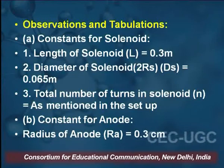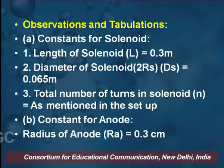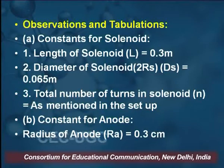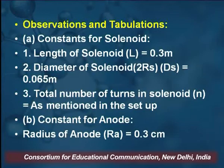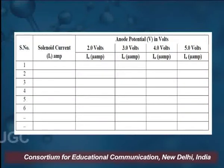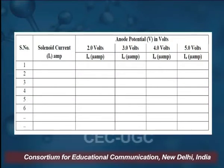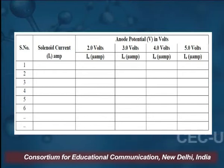For the anode constants, the radius of the anode Ra is equal to 0.3 centimeter, which is also given. The table is where we put the values, taking 10 to 12 sets of readings.